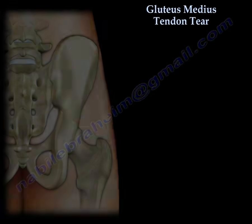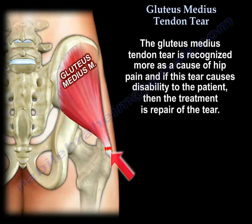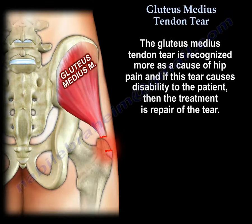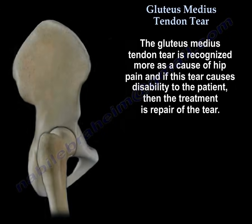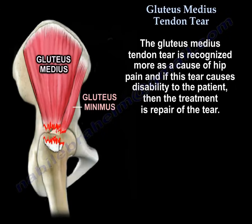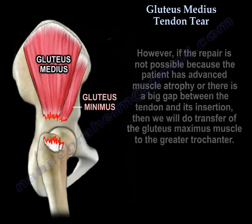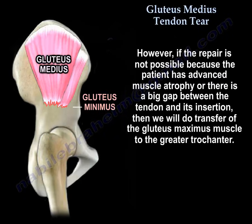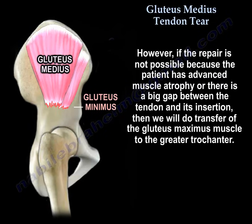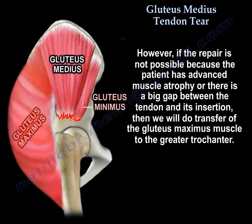Gluteus medius tendon tear is recognized more as a cause of hip pain, and if that tear causes disability to the patient, then the treatment is repair of the tear. However, if the repair is not possible because the patient has advanced muscle atrophy or there is a big gap between the tendon and its insertion, then we will do transfer of the gluteus maximus muscle to the greater trochanter.